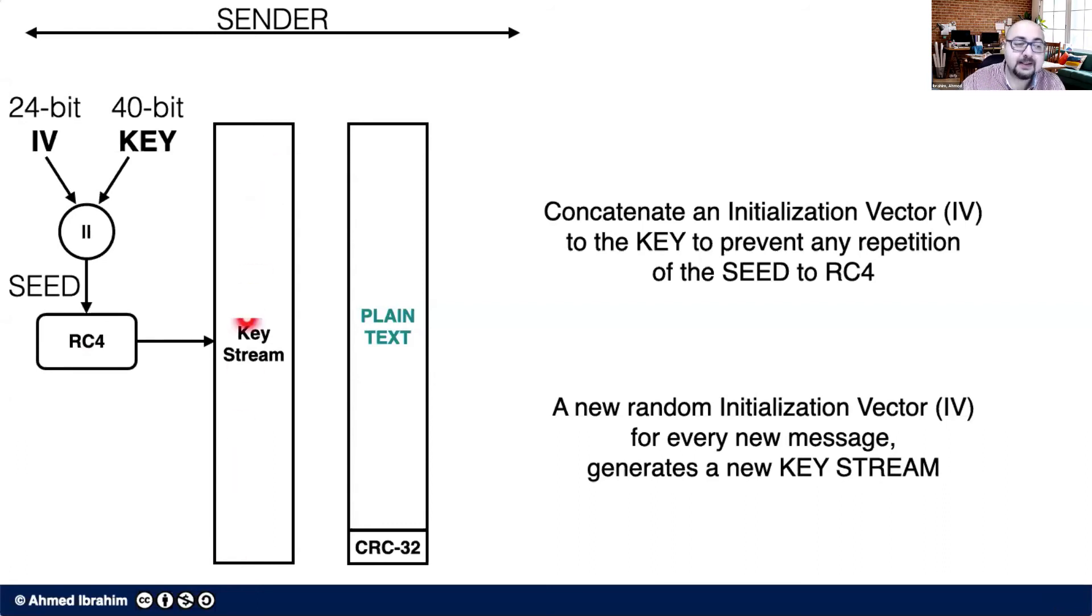So what happens next between the key stream and the plain text in order to produce the ciphertext? If you remember RC4, what happens using these two such that we can output a ciphertext?